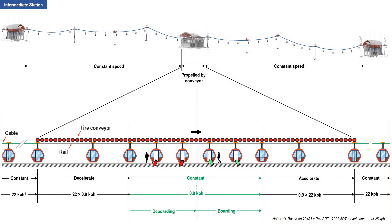The movement of the detachable cabins slightly differ between an intermediate and an end station. First, we explore the intermediate station. We will use an example, one of the lines at the La Paz ART. This cabin travels at a constant speed of 22 kph towards the station. When the cabin arrives at the station, the cabin grip detaches from the cable. Instantaneously, the tire conveyor colored in red circles takes over the propulsion of the cabin. The conveyor decelerates the cabin from 22 kph to a constant speed of 0.9 kph.